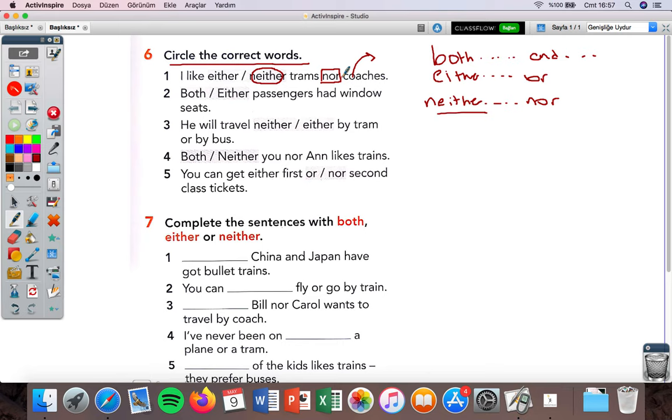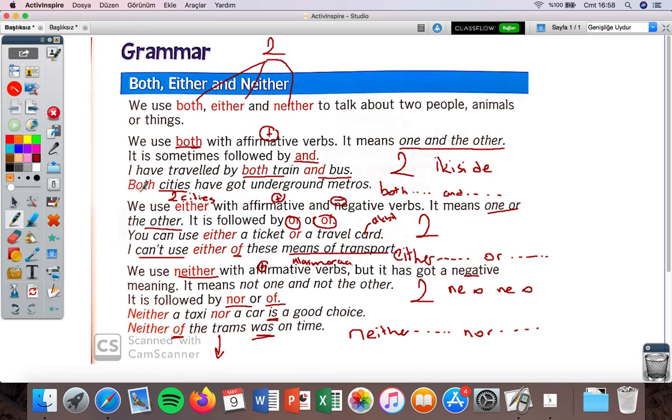There's 'nor', so which one is used with nor? Neither. So I have to choose neither. What is coach? Coach is like the bus that we use, like Ulusoy, Kamil Koç - the big buses that take you from one city to another. Number two: both or either passengers had window seats. This is plural - you see passengers. Window seat means a seat by the window.